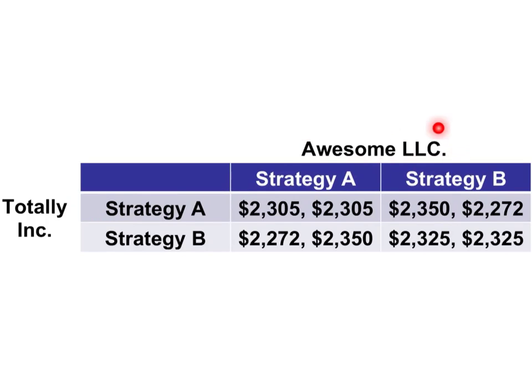Awesome LLC has a similar situation. Their dominant strategy is also to play Strategy A. If they play Strategy A, their payouts are $2,305 or $2,350. $2,305 is greater than $2,272 if they played Strategy B, and $2,350 is better than $2,325 if they played Strategy B. So Awesome LLC should definitely play Strategy A, regardless of what Totally Ink decides to do.